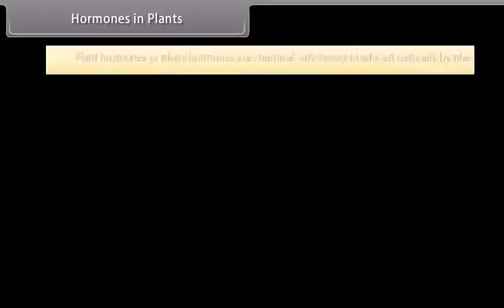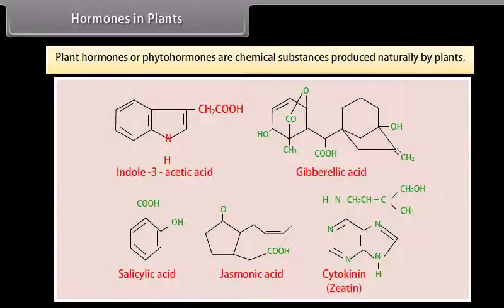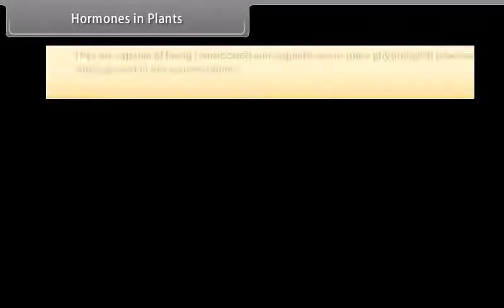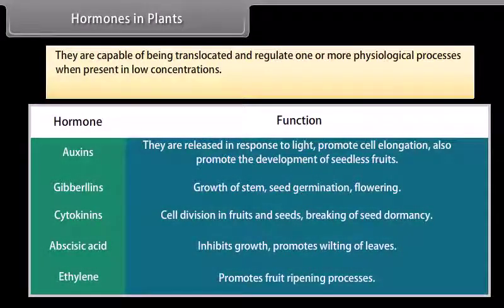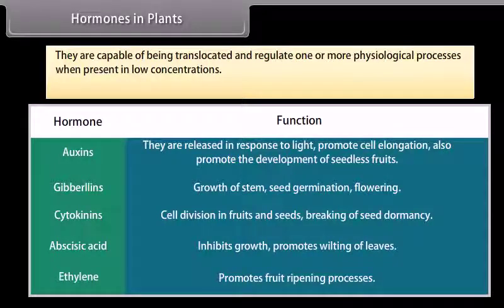Plant hormones or phytohormones are chemical substances produced naturally by plants. They are capable of being translocated and regulate one or more physiological processes when present in low concentrations.